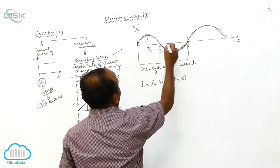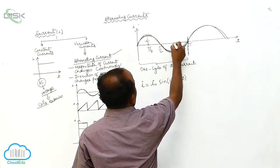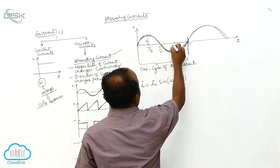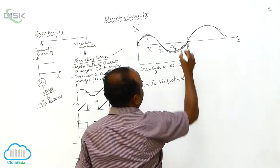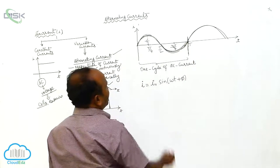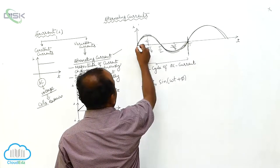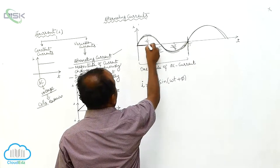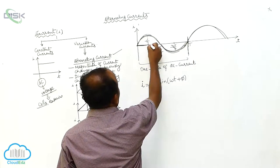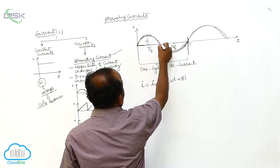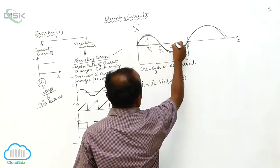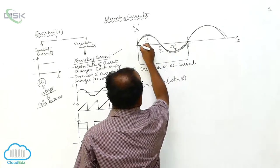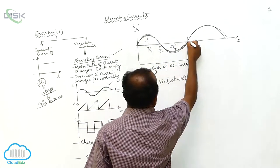This point is called 3T by 4, and this is called T. Up to this point is T by 4; here is T by 2; here is 3T by 4; and here, that is T.